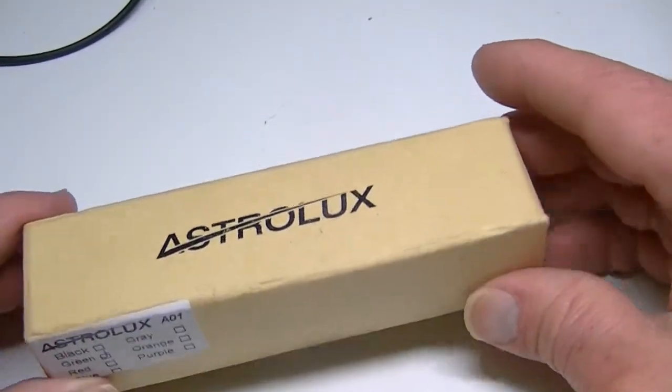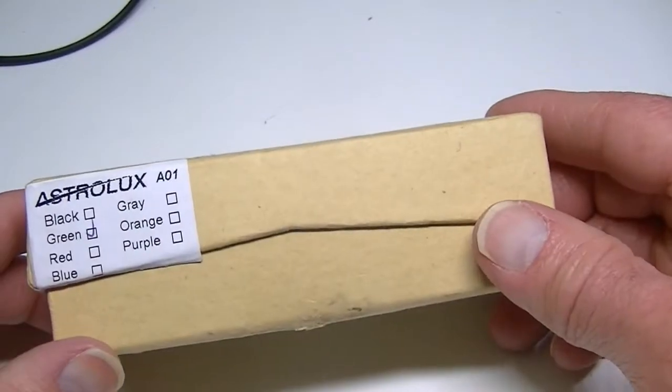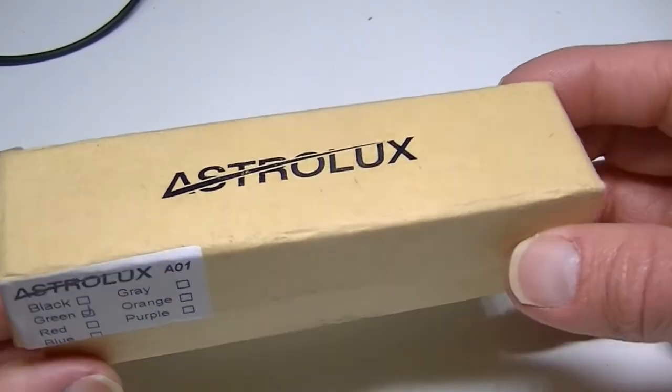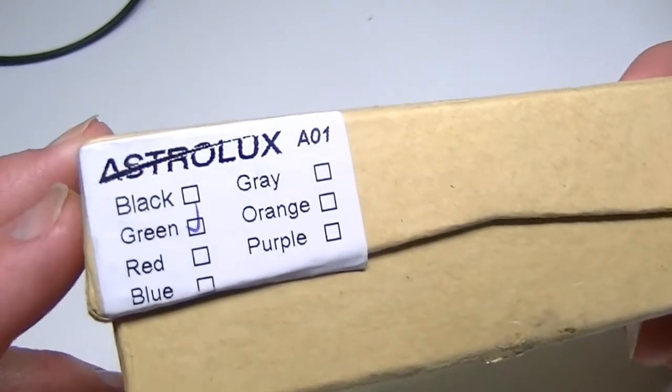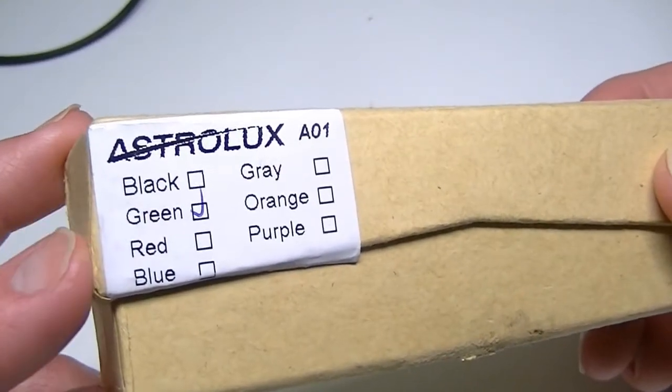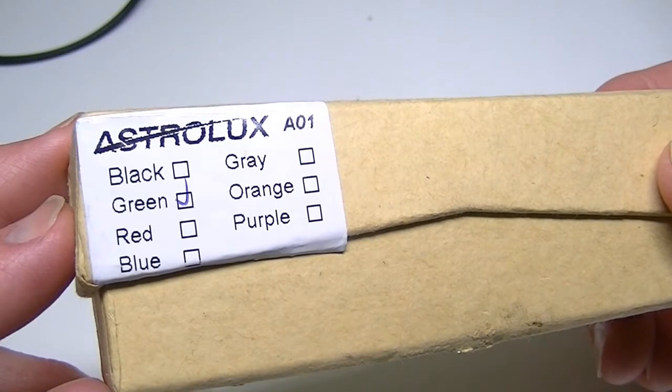Hello everyone, Lights and Gear is back to take a look at another flashlight. Today I have something very small from the folks at Astrolux. This is the Astrolux A01, and theoretically it comes in several different colors.